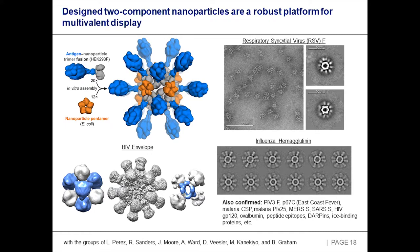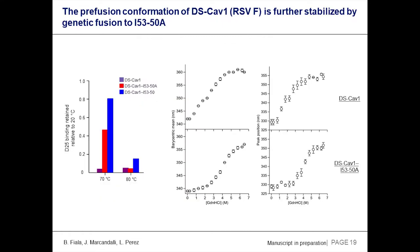Very complex proteins to work with, and the particles have proven very robust to display of these proteins. We've put a large number of other proteins on the outside of these particles, and I don't think we've failed yet — everything we've tried, the particle has tolerated. This is a clear differentiation from things like bacteriophage VLPs, where you can display small epitopes but not large complex antigens. So we really think this is a robust platform.